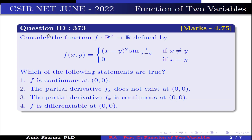The question is: consider the function f from R² to R defined by f(x,y) = (x−y)² · sin(1/(x−y)) if x ≠ y, and 0 if x = y. Which of the following statements are true? Option 1: f is continuous at (0,0).